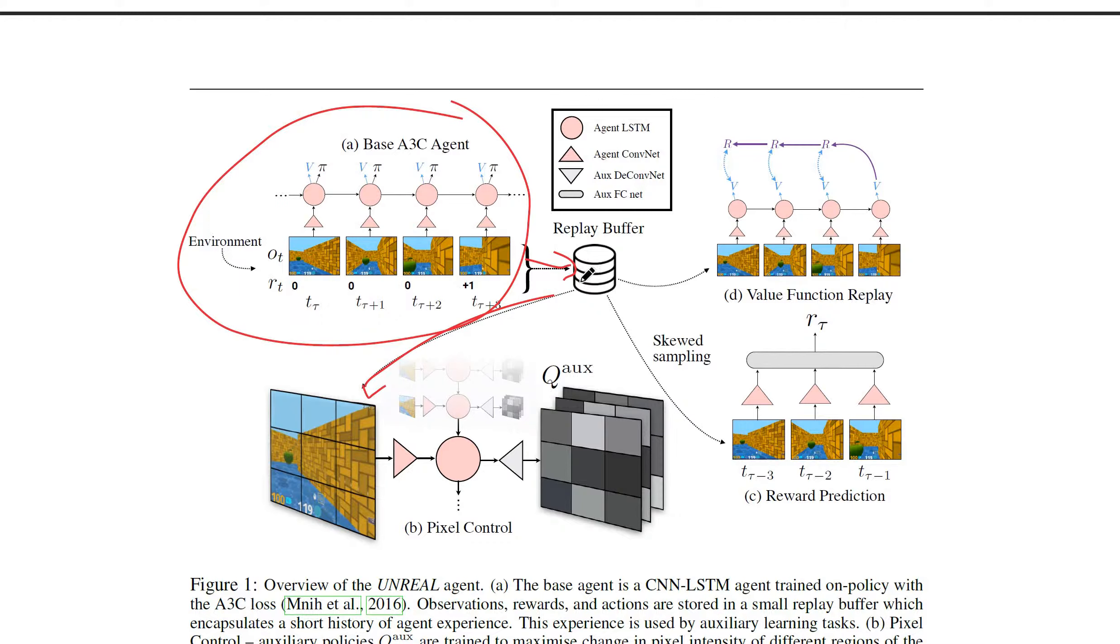For one, you try to learn these auxiliary tasks. Note that these are shared parameters between all of these networks. That's why the auxiliary tasks actually help. But you also try to better learn your value function. They call this off-policy learning because you pause the base agent training for a while and then train the value function some more. You also try reward prediction from here.